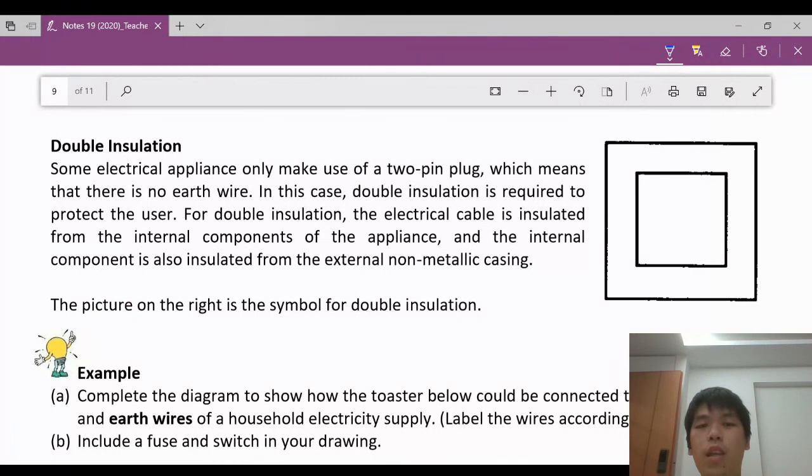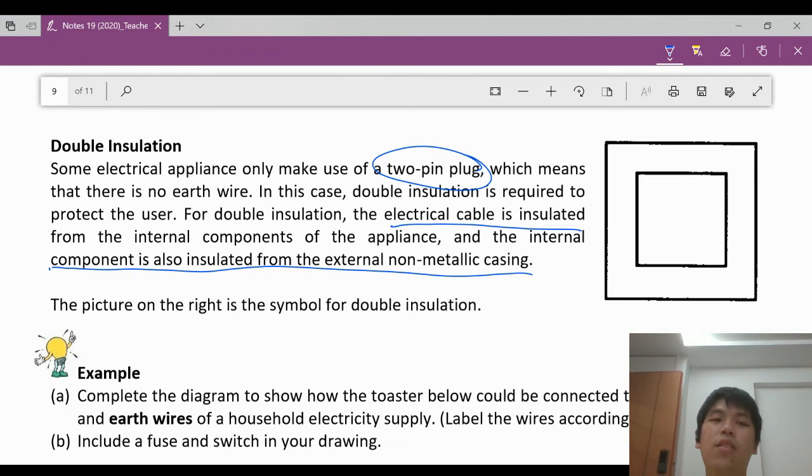One other way is to also have double insulation. Some devices don't use 3-pin. They use 2-pin plug, which means that there is no earth wire. In this case, they use double insulation to protect the user. What does that mean? The electrical cable is insulated from the components of the appliance. And the components is also insulated from the external non-metallic casing. So there is insulation to prevent the wire from coming to contact with the other components inside. And these components are also isolated from the casing outside, which is usually non-metallic. It's like plastic.